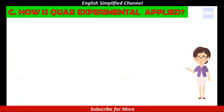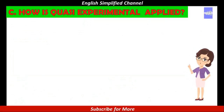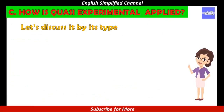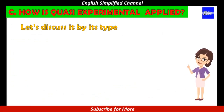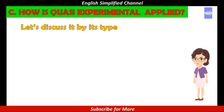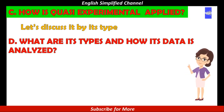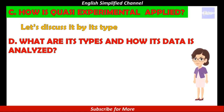And this is Part C. How is quasi-experimental applied? As there are some types of quasi-experimental, and the way they are applied is different for each type. To answer this question, we have to discuss it type by type. And continue to the next part, that is Part D. What are its types and how is the data analysed? The types of quasi-experimental are such as: